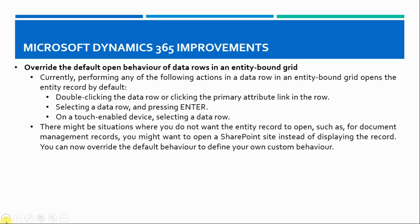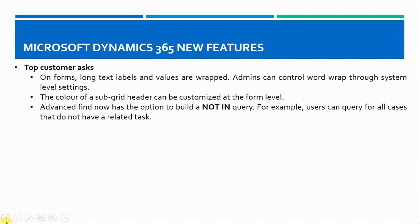Let us now see the new features added in Dynamics 365. Microsoft addressed top customer requests: on forms, long text labels and values were wrapped, and now admins can control word wrap through system-level settings. The color of the grid header can be customized at the form level. Advanced Find now has an option to build a NOT inquiry — for example, users can query all cases that do not have a related task.